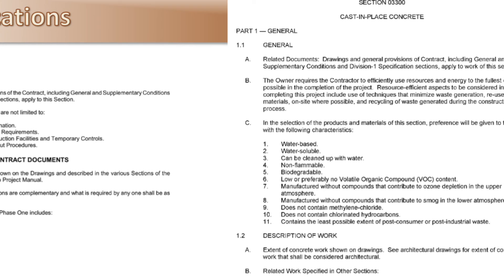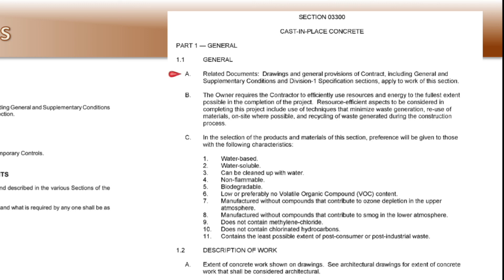Another example — Part 1, General, A. Related Documents: 'Drawings and general provisions of the contract, including general and supplementary conditions and Division I specification sections, apply to the work in this section.' So everything in Division I now applies to this section. It goes on to say the owner requires the contractor to efficiently use resources and energy to the fullest extent possible. Resource-efficient aspects to be considered include use of techniques that minimize waste generation, reuse of materials on-site where possible, and recycling of waste generated during the construction process.